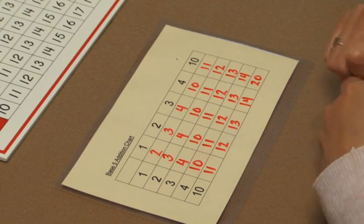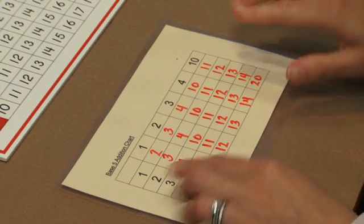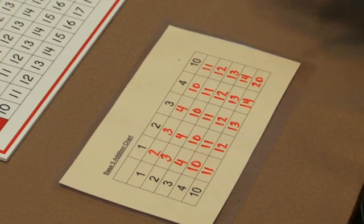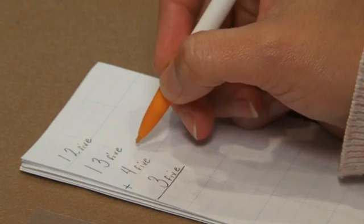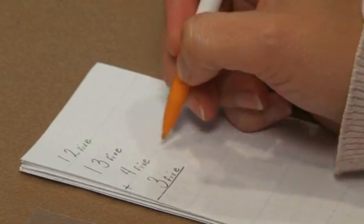Now that the students have their base 5 addition chart filled out, I can present them with an equation, and we can work through that together. As we record our equation to make sure that we are indicating that we are working in base 5, we'll write a small 5 to the right of our number. So we have 3, and we're adding 4.